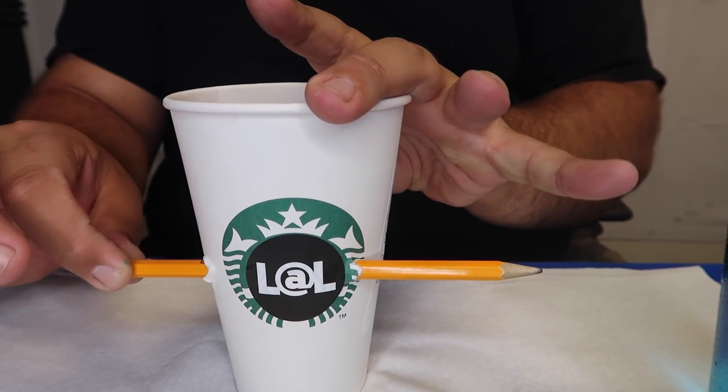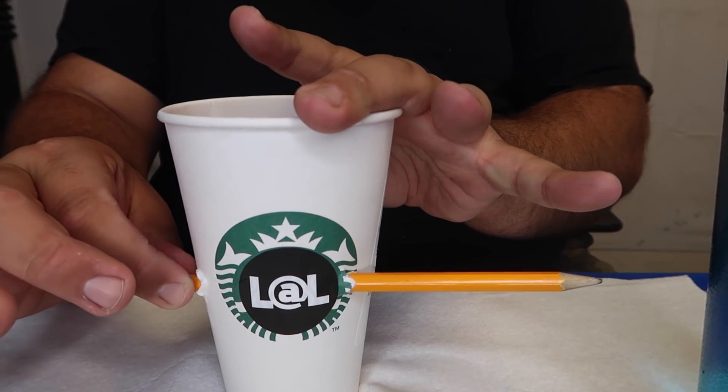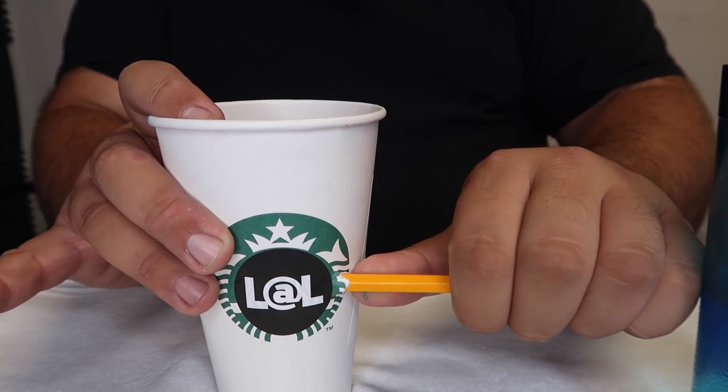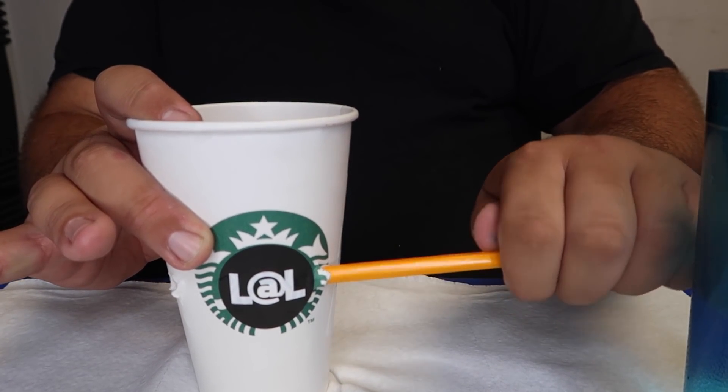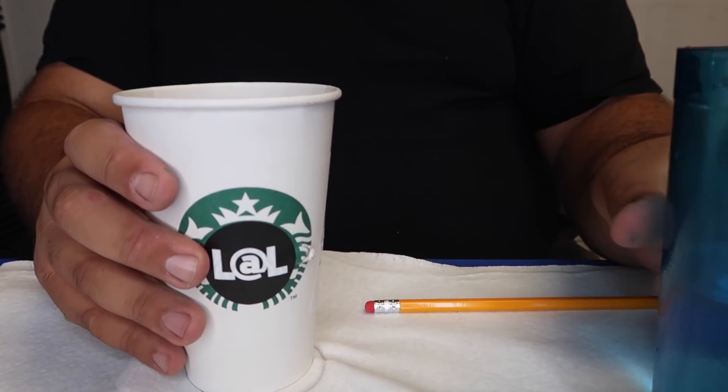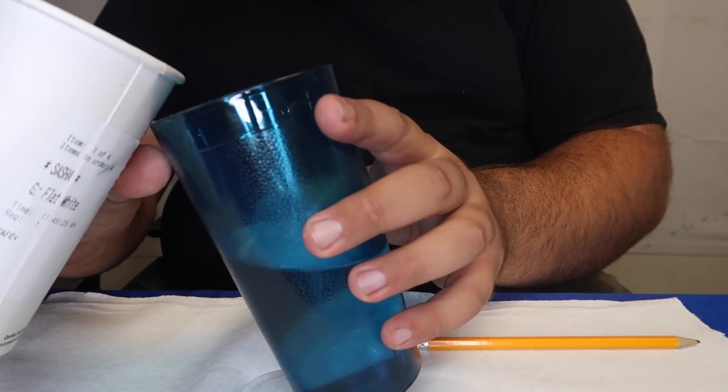You can see the pencil going through the cup. Watch. Go all the way through. Just like that. No water spills out. Check this out.